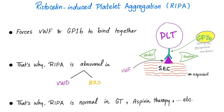What is ristocetin-induced platelet aggregation? It's the same platelet aggregometry, but the agonist used is ristocetin. What is ristocetin? Ristocetin is a substance that forces GP1B — a receptor on the platelet surface — to bind to von Willebrand factor. When they bind together, platelets adhere, and when they adhere, they will later aggregate. RIPA will be abnormal in cases of von Willebrand disease, where the von Willebrand factor is defective, and Bernard-Soulier syndrome, where the GP1B receptor is defective. That's why you can manage both diseases by giving desmopressin — desmopressin forces von Willebrand factor to be expressed, which then forces the receptor to bind to it.